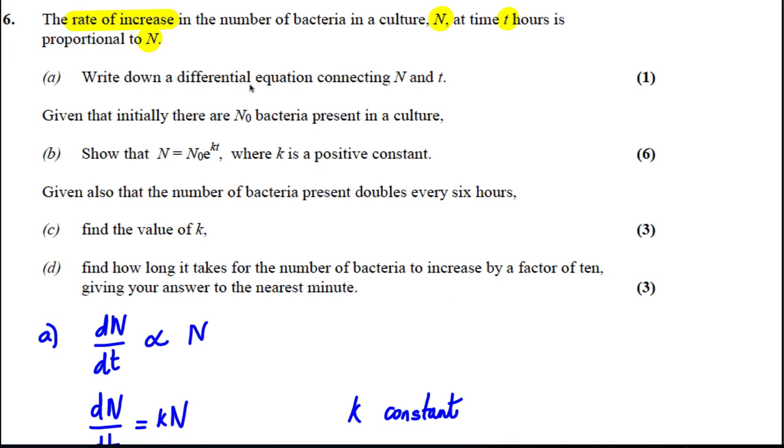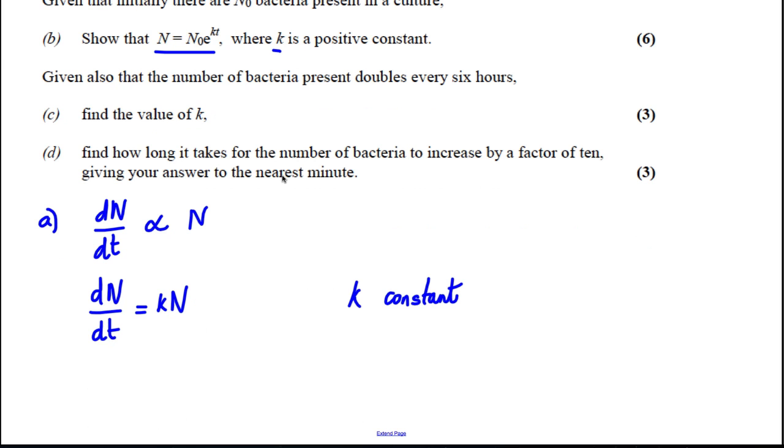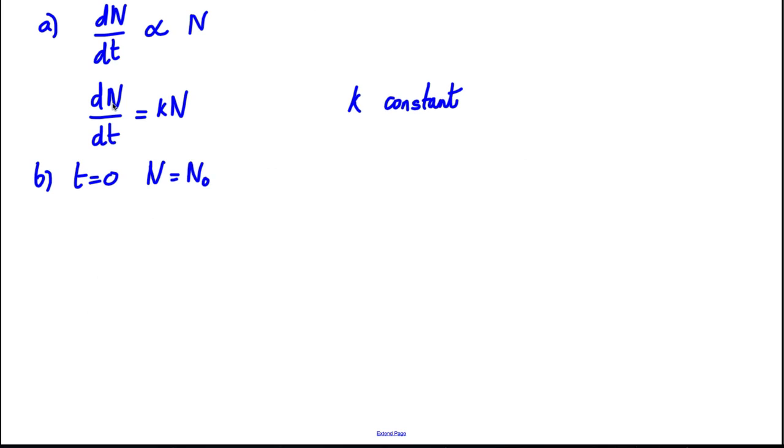It says, given that initially there are N₀ bacteria present in the culture, show that N is equal to N₀e^(KT), where K is a positive constant. Well, what we're told in part B is that when time is zero, N, the number in the culture, is equal to N₀. So let's solve this differential equation. dN by dt is equal to KN. We're going to separate variables and integrate. So 1 over capital N dN is equal to K dt and we're integrating both.